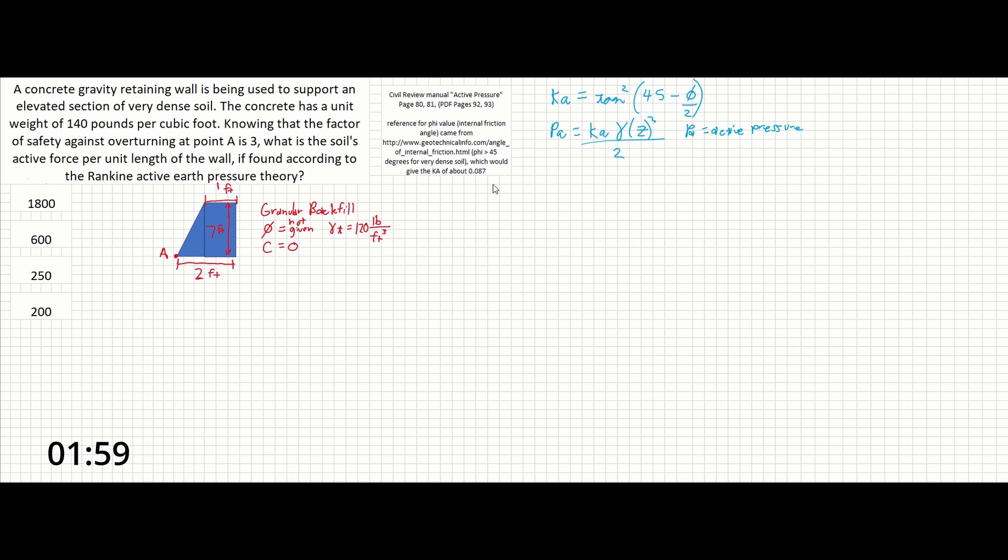However, we can't do that in this case. It notes that phi is not given for this problem, so we're not going to be able to calculate it using these two steps. If we had it, we could do that and we'd be done. In this case, we're going to solve for the moments of the wall about point A.